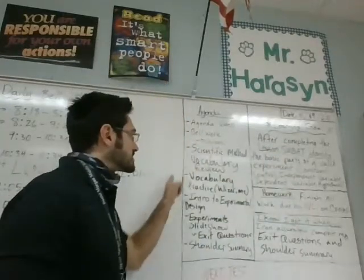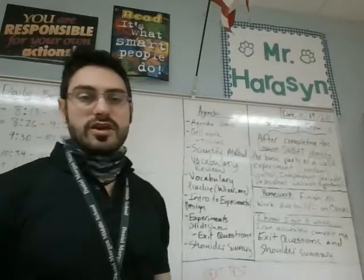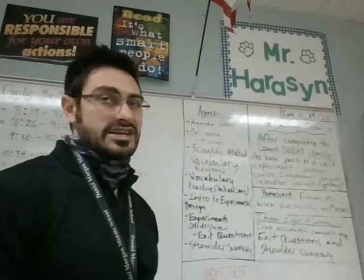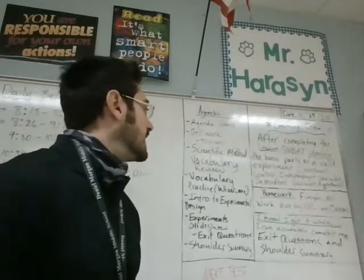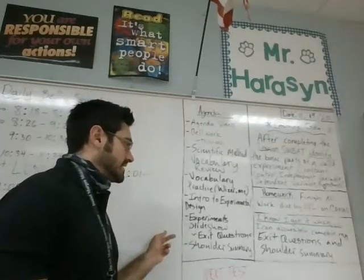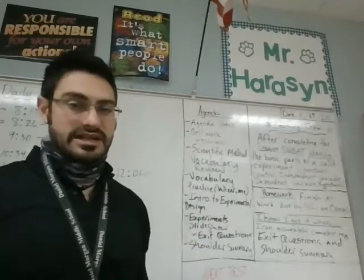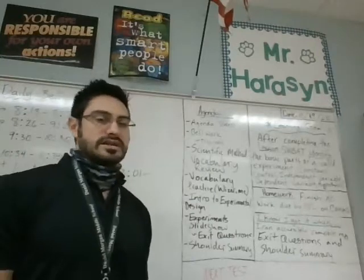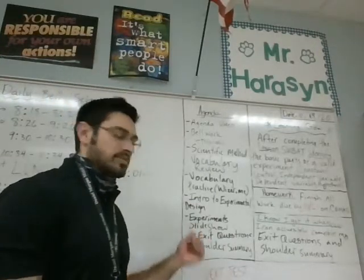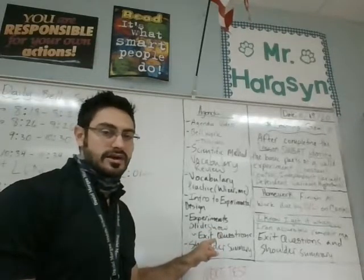Here's your turn-by-turn directions. We're going to do the bell work. We're going to go over the scientific method vocabulary, because vocabulary specifically in this unit gets in people's way more than anything else — the concepts are actually very simple. We're going to do some vocabulary practice with the Wiser Me. We will do an intro to experimental design in general, and then we're going to do the experiment slideshow, which has exit questions right here. Those are going to be graded.